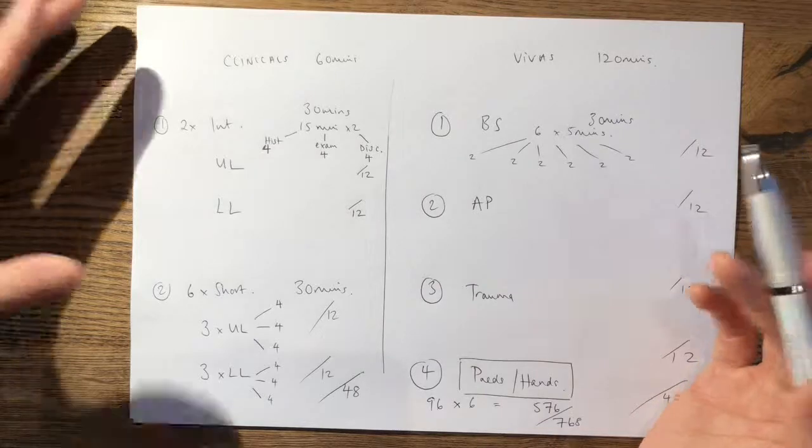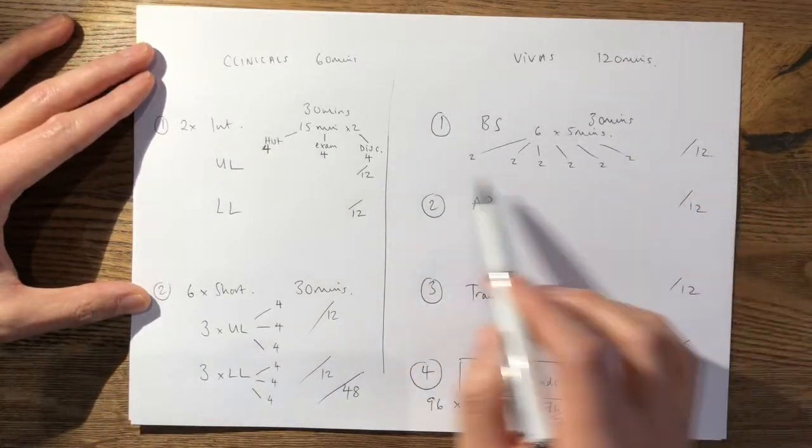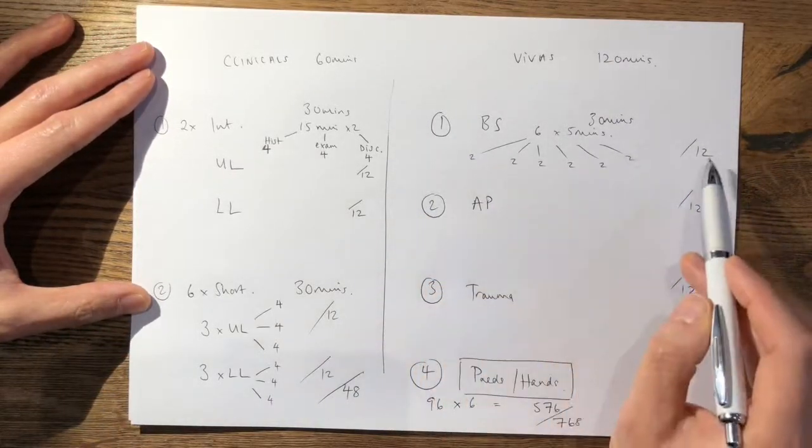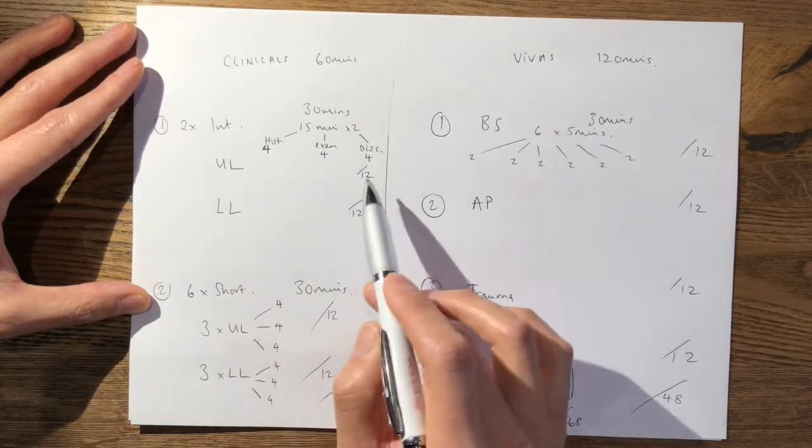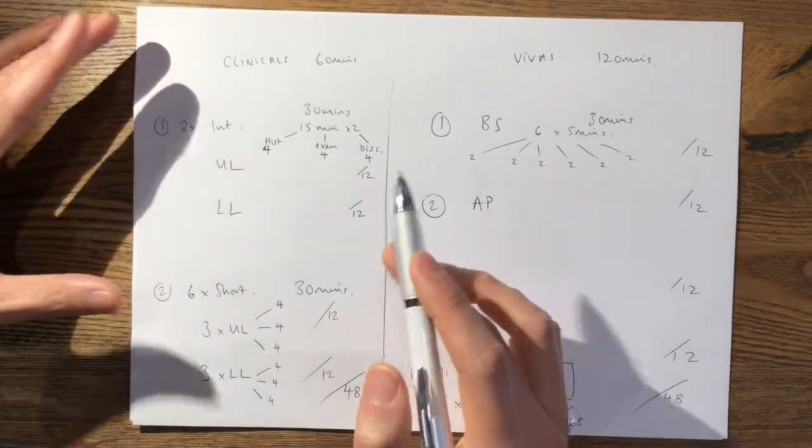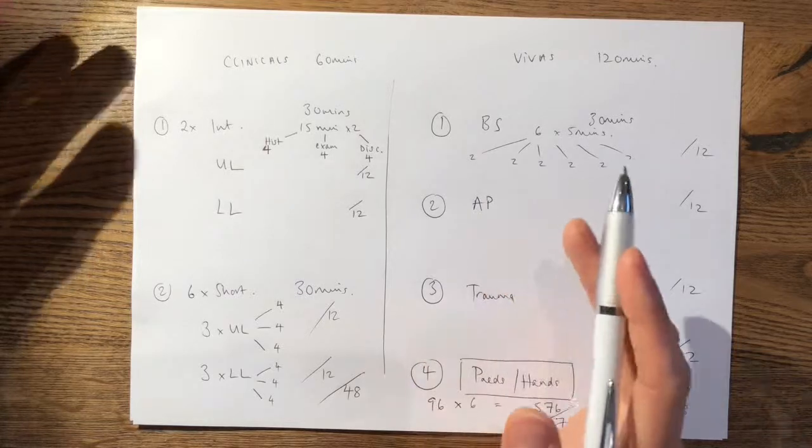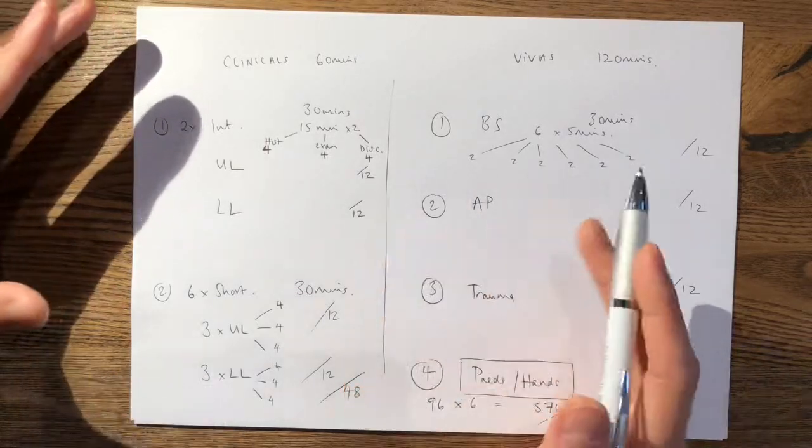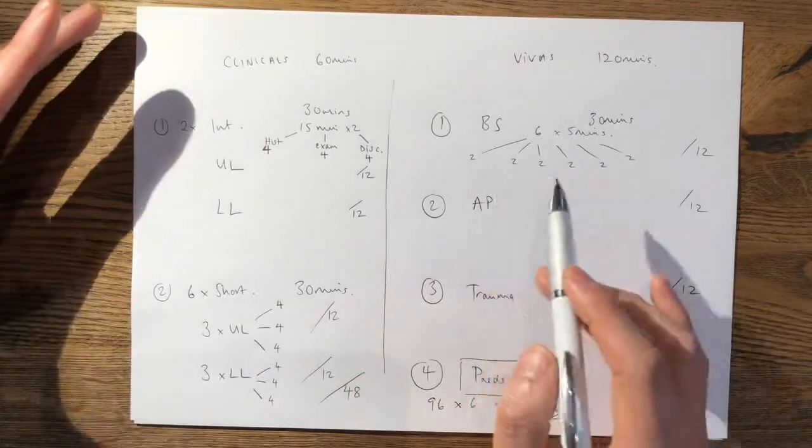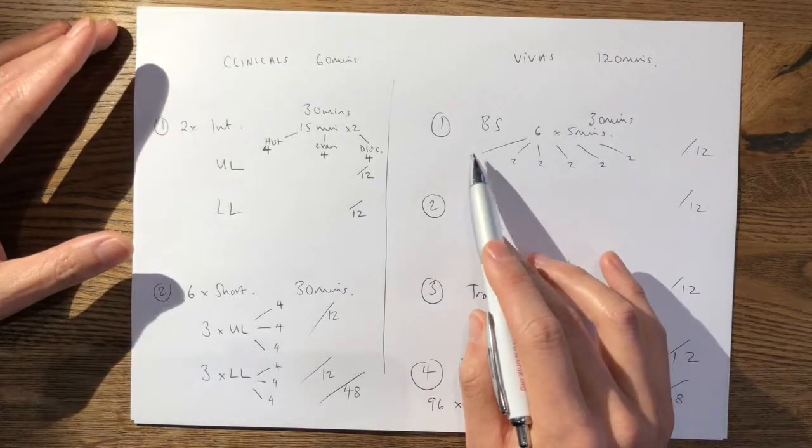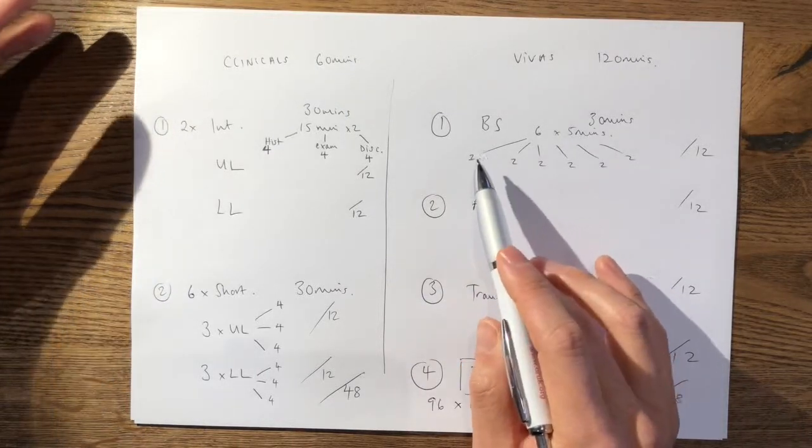Or conversely, you can look at it as one whole viva table is equal to the number of marks in one whole intermediate case. So if you score really well in one intermediate case, you can make up the marks very easily if you just have one bad question station in one of your viva stations.